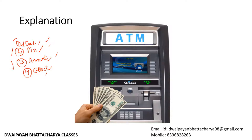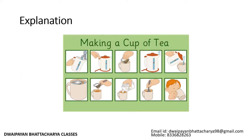For another explanation — everyone is familiar with making a cup of tea. What happens? You first pour water into a pot, boil it, add tea leaves or tea powder, boil again, pour it into a mug, add some masala or cocoa powder if you want, add milk, stir it, and drink. Does it happen that you first add milk and then the tea leaves? No — there is a particular sequence.